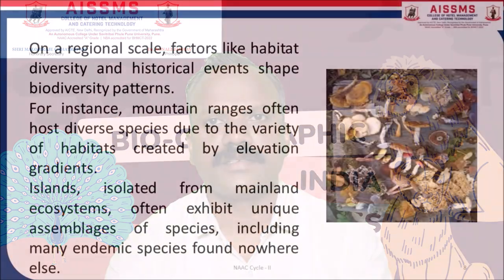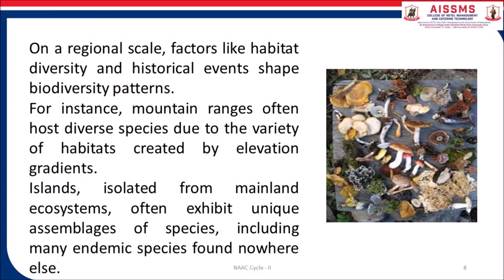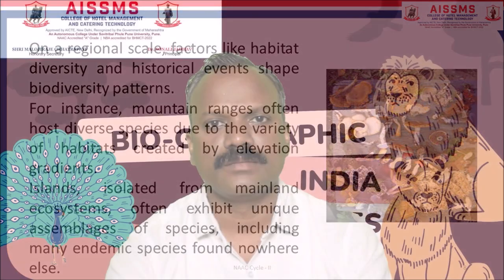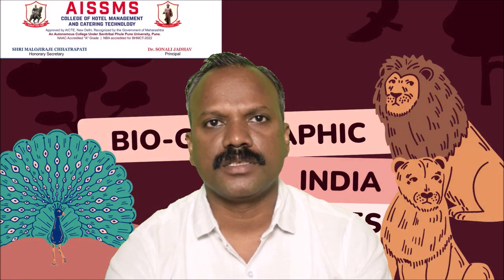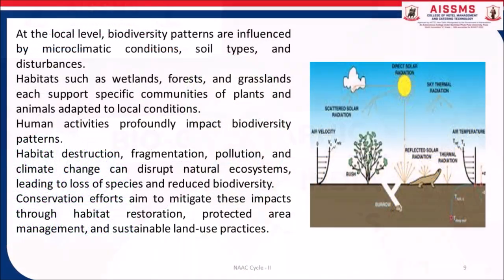On a regional scale, factors like habitat diversity and historical events shape biodiversity patterns. Mountain ranges often host diverse species due to the variety of habitats created by elevation gradients. Islands isolated from mainland ecosystems often exhibit unique assemblages of species, including many endemic species found nowhere else. At the local level, biodiversity patterns are influenced by microclimatic conditions, soil types and disturbances. Habitats such as wetlands, forests and grasslands each support specific communities of plants and animals adapted to local conditions.